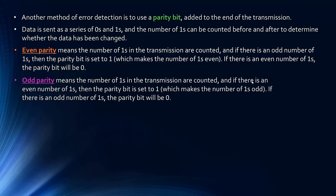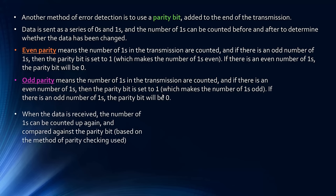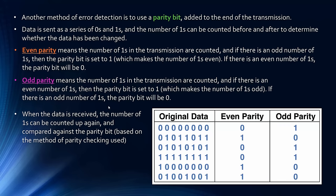Odd parity is the same method but opposite: if there's an even number of ones, the parity bit is set to one to make the total odd; if there's already an odd number of ones, the parity bit is zero. When data is received, the number of ones is counted again and compared against the parity bit — if it doesn't match, the data can be resent. In exam questions, which parity type is being used will be specified.